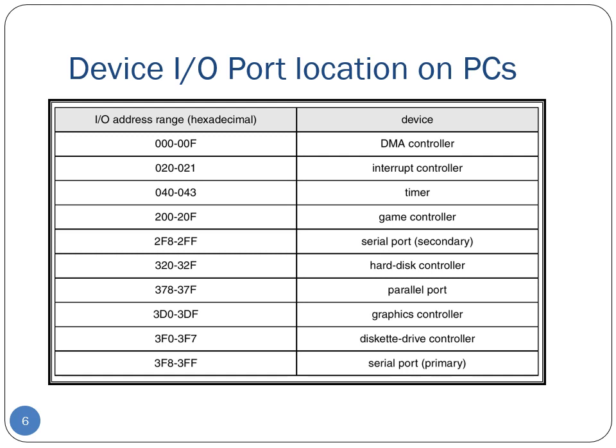The next thing to understand is how the CPU gives commands to a controller to accomplish the I/O transfer. We've seen that controllers have data and control registers, and the CPU communicates with the controller by reading and writing into these registers. With so many I/O devices connected at any point, each having their own control and data registers, how does the CPU distinguish between them? This is where addresses come in.